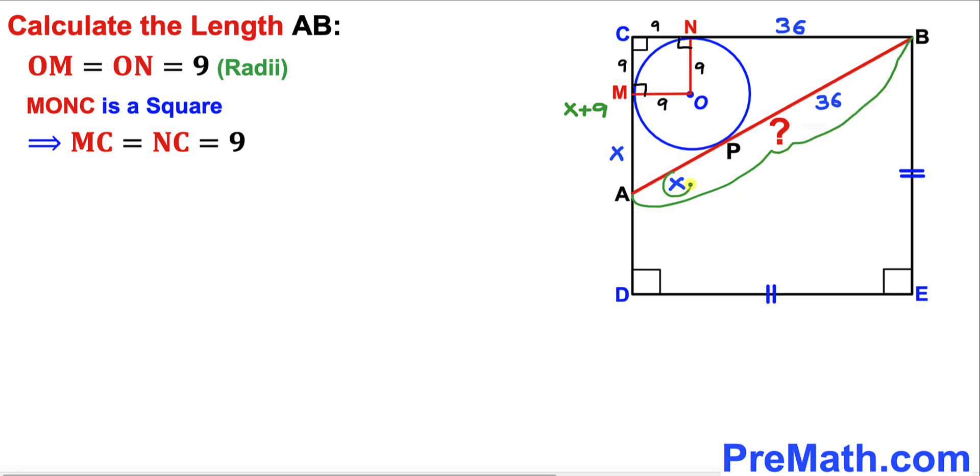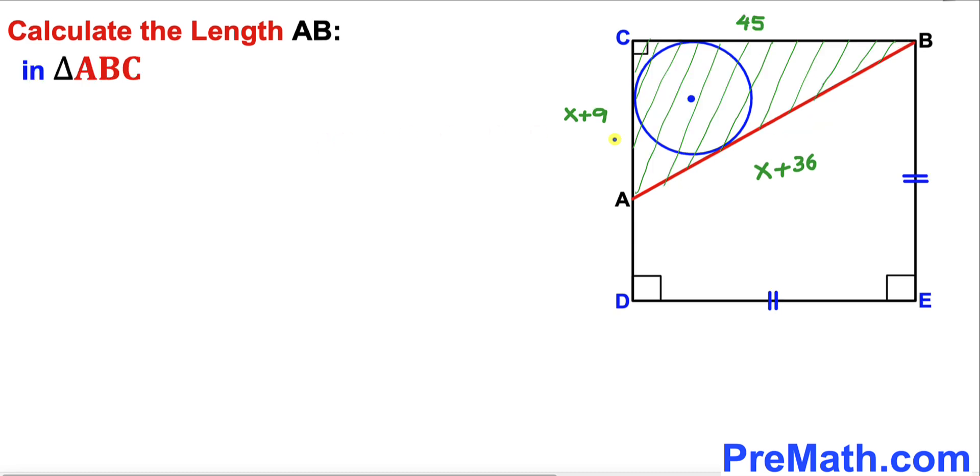Finally, the total length of BC we know is 45 units. Here's our next step. Let's focus on triangle ABC.